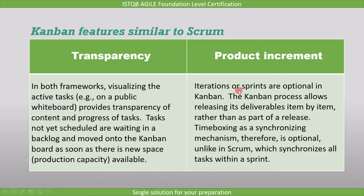Iterations or sprints are optional in Kanban. The Kanban process allows releasing its deliverables item by item, rather than as part of a release. Timeboxing as a synchronizing mechanism is therefore optional, unlike in Scrum, which synchronizes all tasks within a sprint.